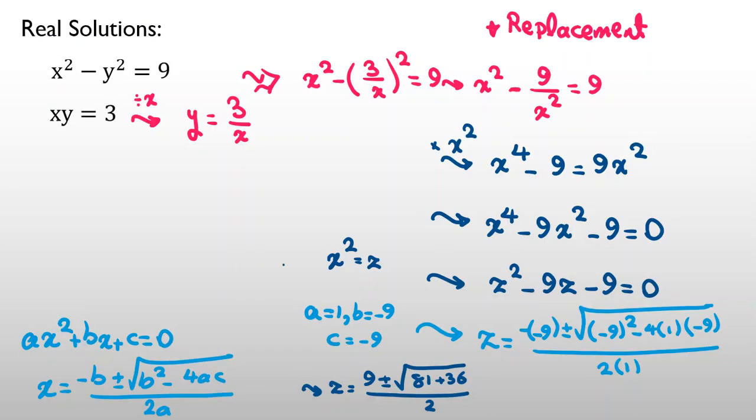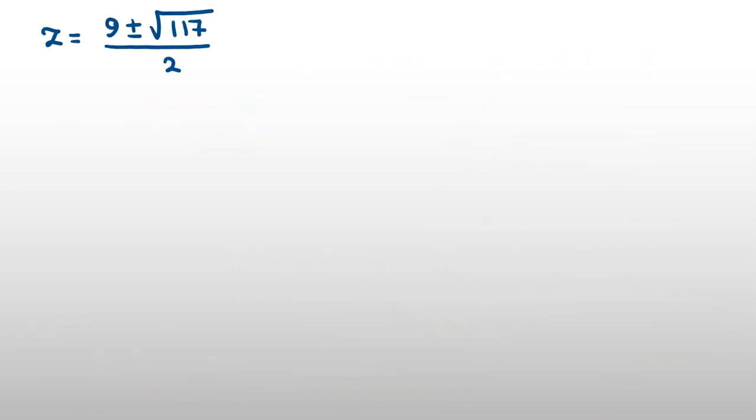it will be 117, all over 2. Now, z was what? Was x squared. z is x squared. So, it should be at least 0. So, because z is at least 0, we know 9 is root to 81. So, if you can't select minus sign, it will be negative.